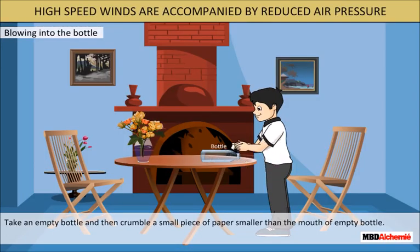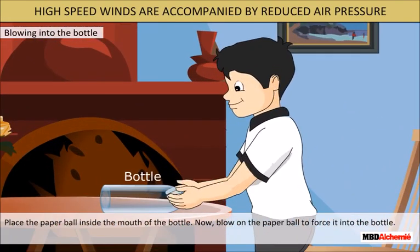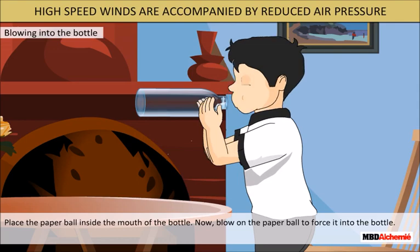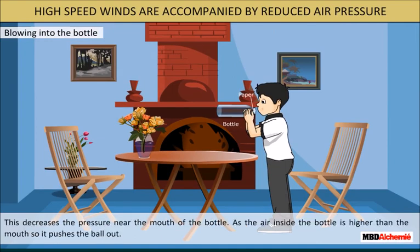Take an empty bottle and crumble a small piece of paper smaller than the mouth of the bottle. Place the paper ball inside the mouth of the bottle. Now blow on the paper ball to force it into the bottle. When we blow into the mouth of the bottle, the air near the mouth has higher speed. This decreases the pressure near the mouth of the bottle. As the air pressure inside the bottle is higher than at the mouth, it pushes the ball out.